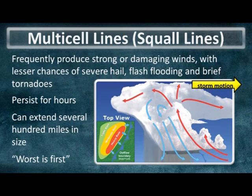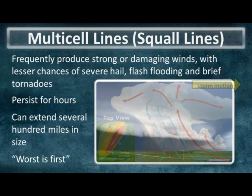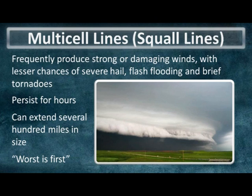Similar to multi-cell cluster storms, a multi-cell line is literally just multi-cell thunderstorms arranged in a line. These can extend from a couple miles wide up to several hundred miles in size and last for several hours. Commonly, squall lines are found along fast-moving cold fronts and even some dry lines. Squall lines are quite notorious at producing damaging winds, oftentimes right along the leading edge of the thunderstorm gust front. That's why if you see a squall line, it's important to remember the key phrase: the worst is first — meaning the worst wind, hail, and even heavy rain will be right at the leading edge of the storm.